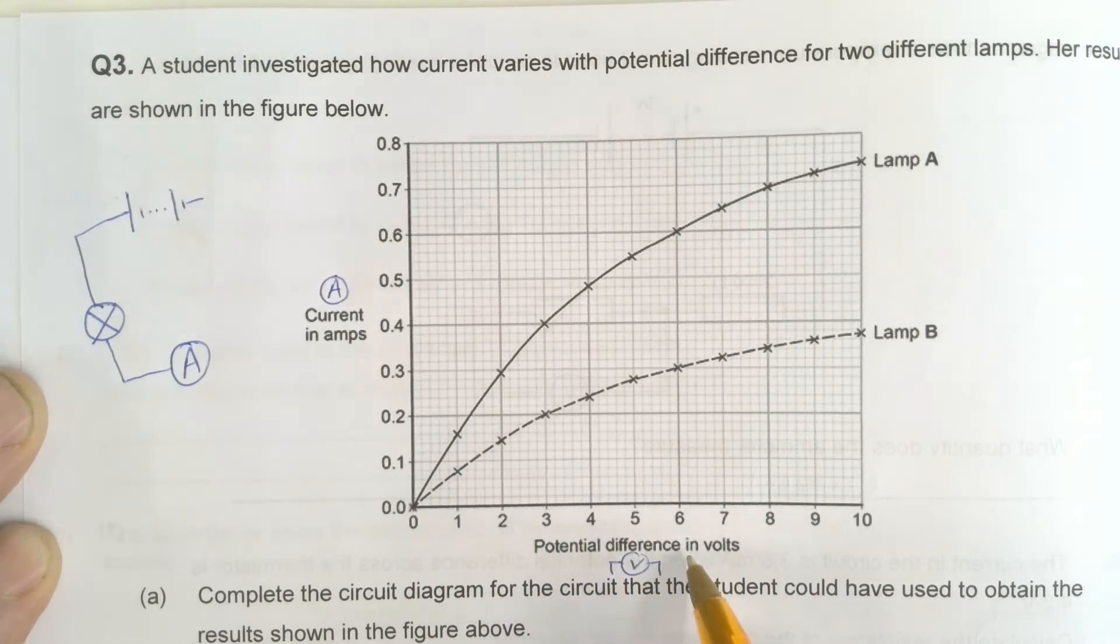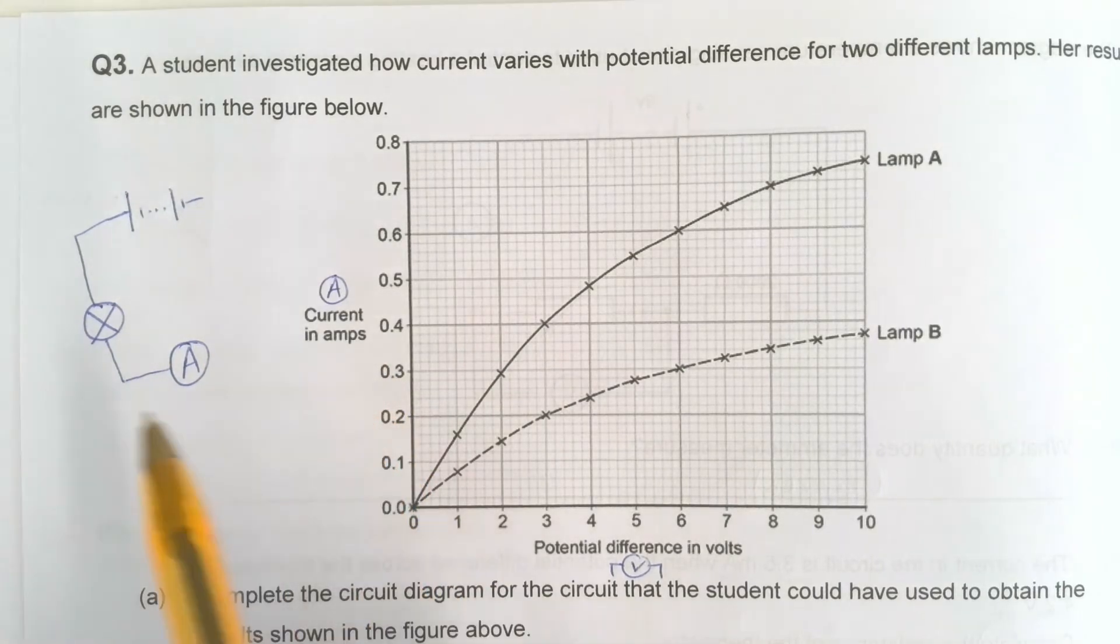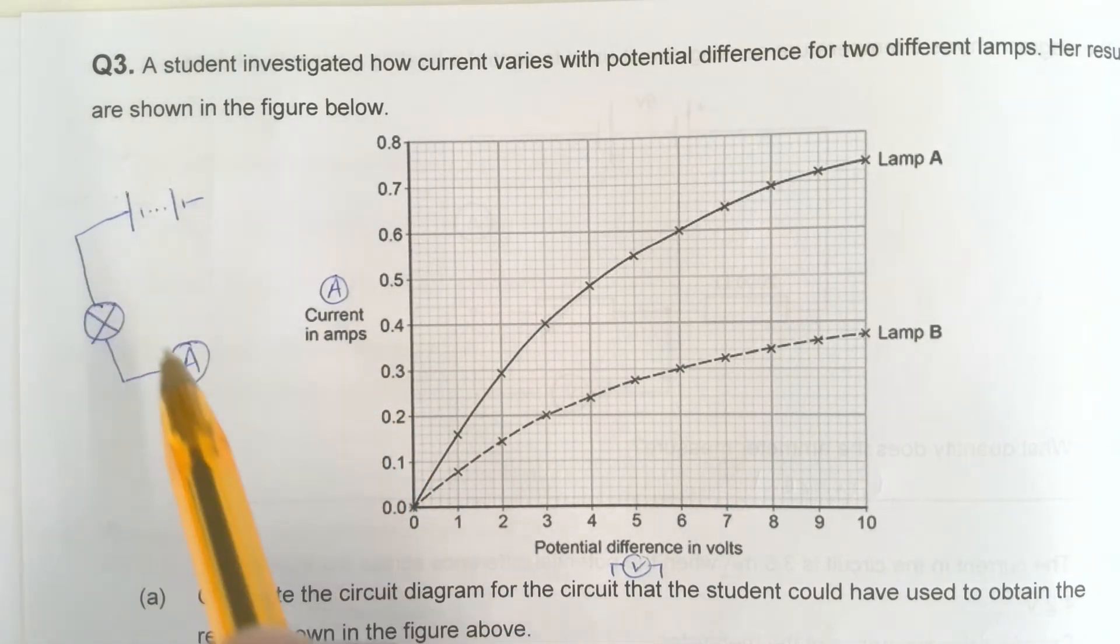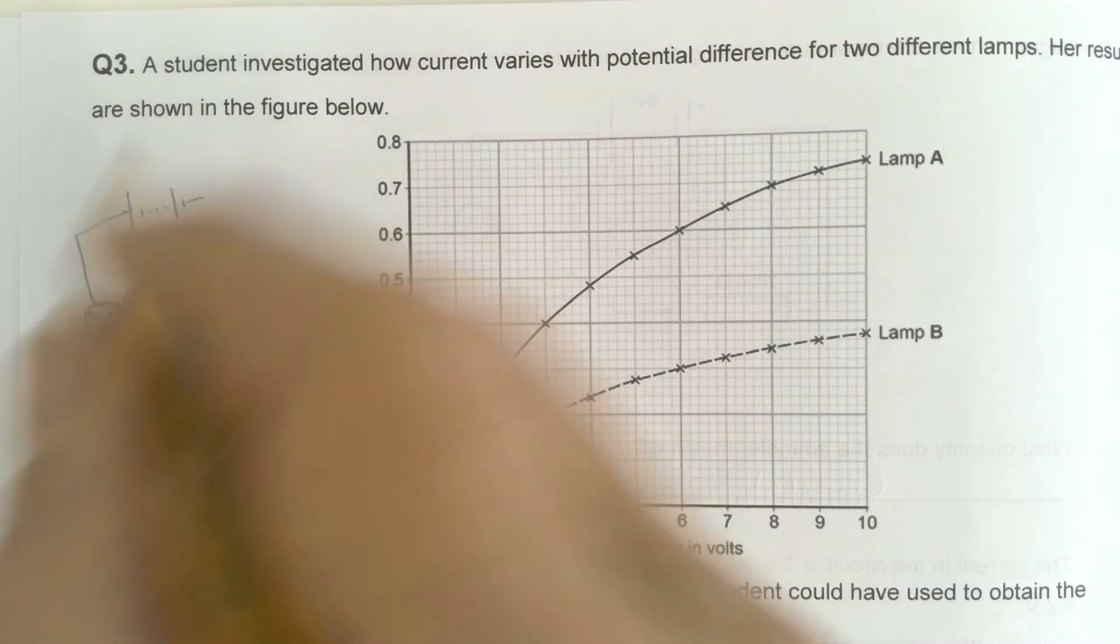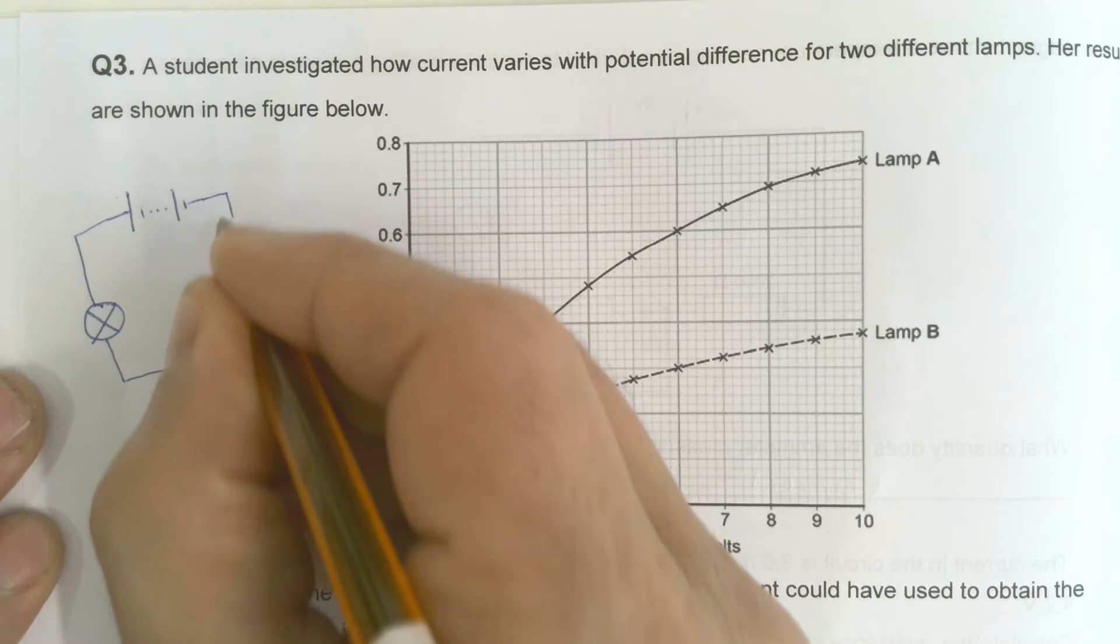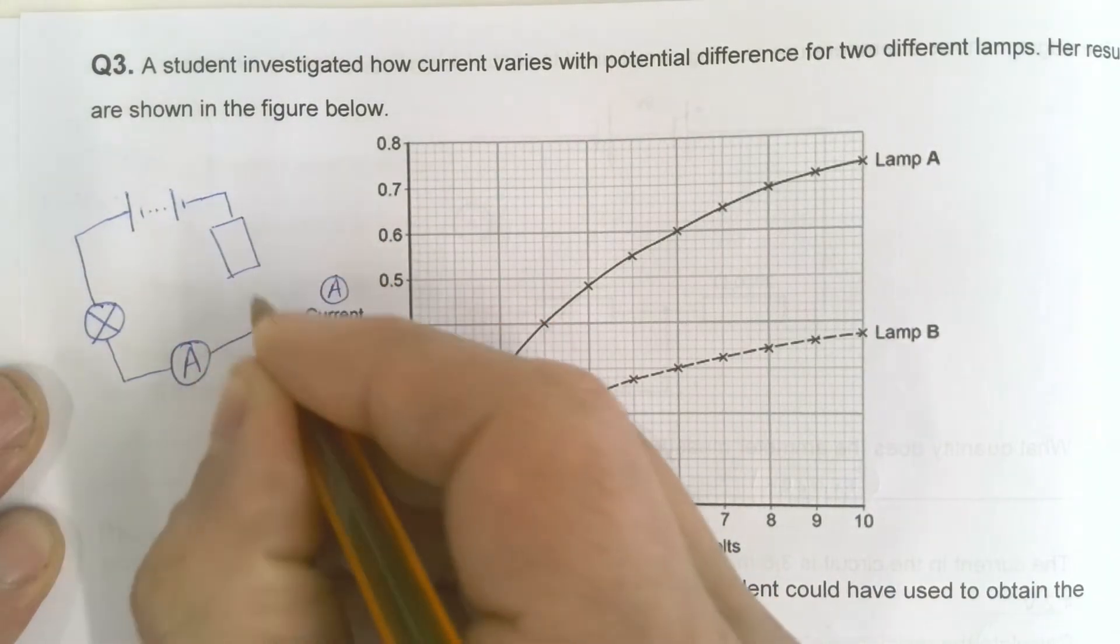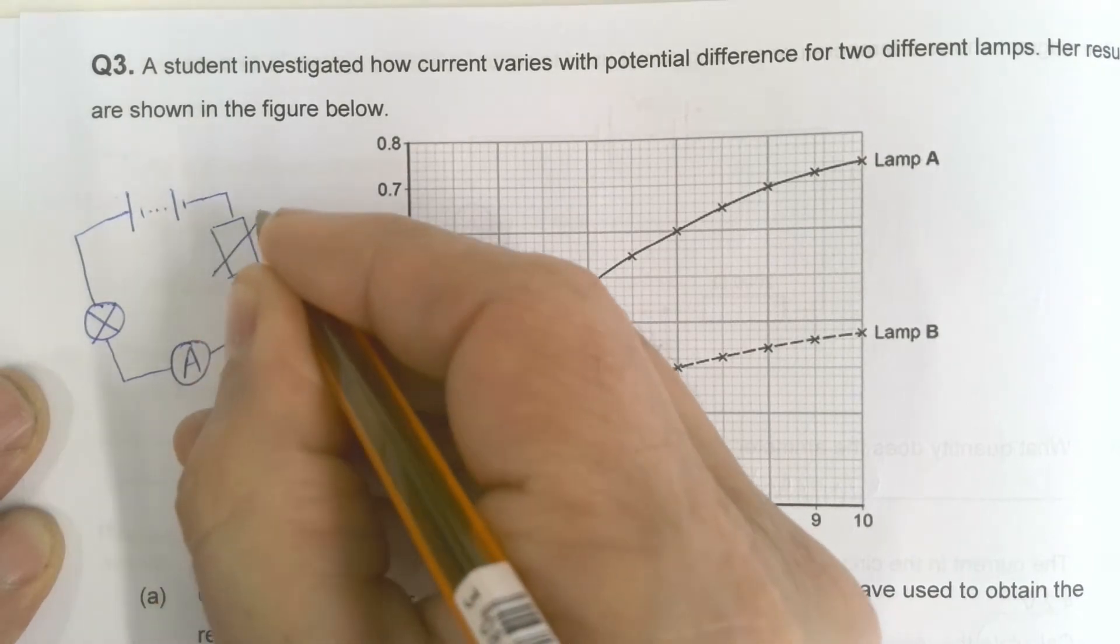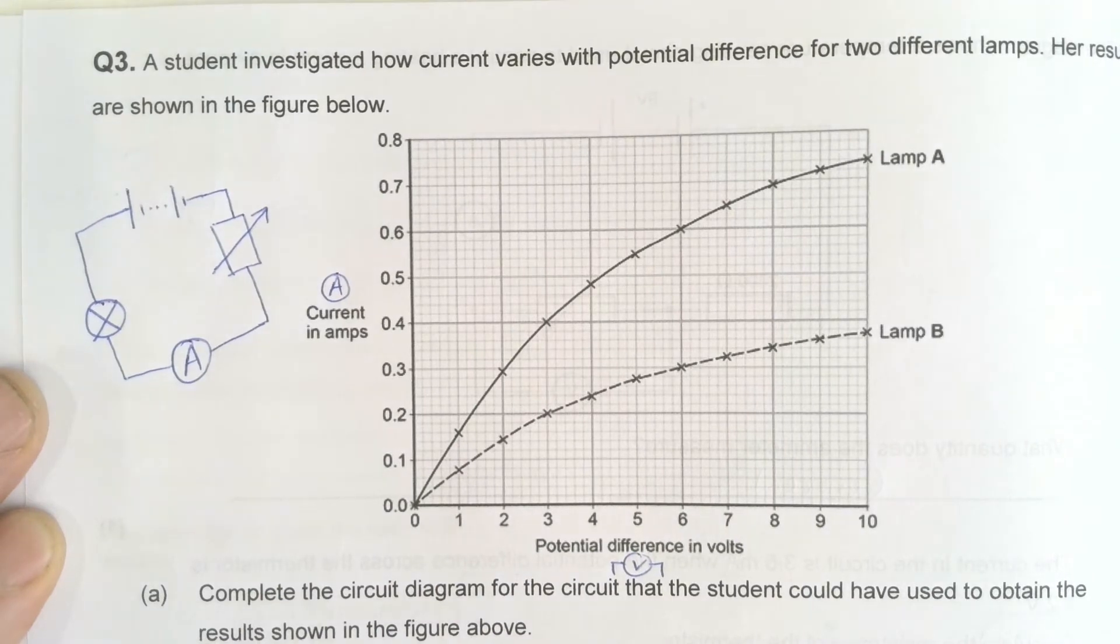I need to be able to change the potential difference through here, so I've got to change the current as well. I need something that's going to change the current and change the potential difference in this circuit. I can't change the battery because it tells me the battery, so I can't put a variable power supply in. Whenever we think of saying it varies, the simplest choice is always a variable resistor.